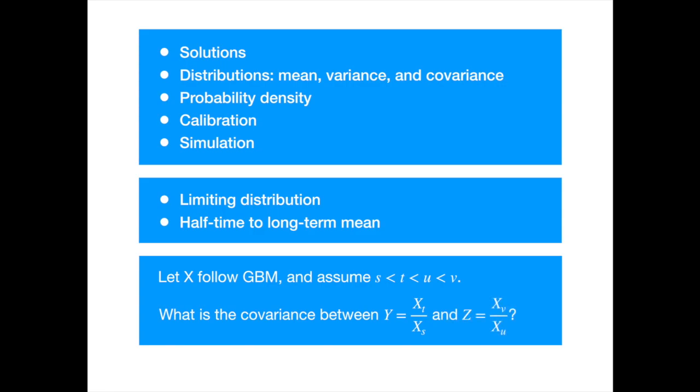Essentially we want to know the covariance between the growths of the process into non-overlapping periods. As usual, please answer in the comments section.